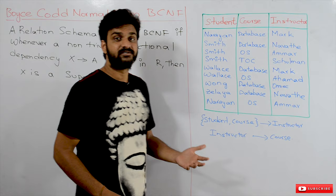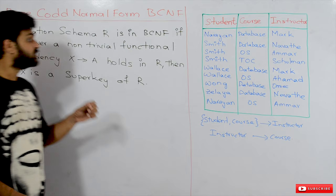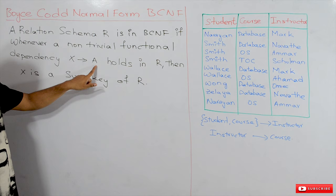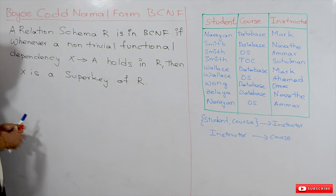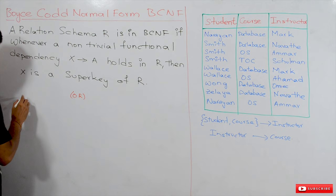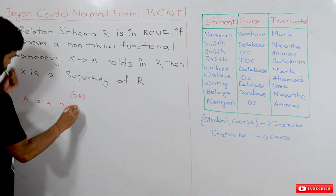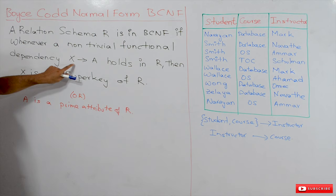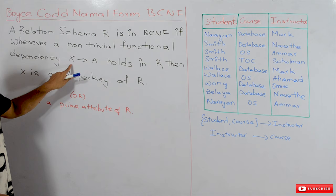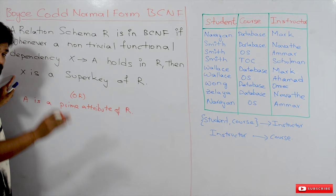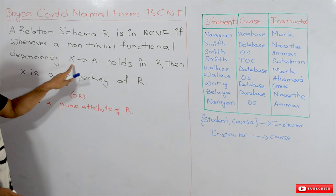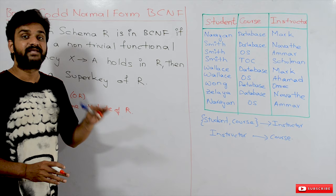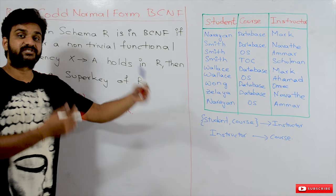So what does Third Normal Form state? The Third Normal Form states that whenever a non-trivial functional dependency X determines A holds in R, then either X is a super key of R, or A is a prime attribute of R. If any one of these two properties holds on a non-trivial functional dependency X determines A, then that functional dependency is in Third Normal Form.